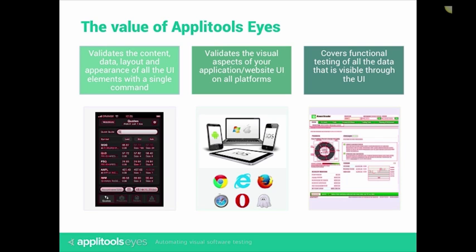We'll start with explaining the value of ApliTools Eyes, and then proceed to a demo to see how it works. The first benefit is that it allows you to validate the content, data, layout, and appearance of all the UI elements on a screen with a single validation command. You will no longer need to write validation code for each element individually, like in traditional automation solutions. Our unique image analysis algorithms automatically identify and validate all the UI elements, making it significantly easier to build and maintain your automated tests.